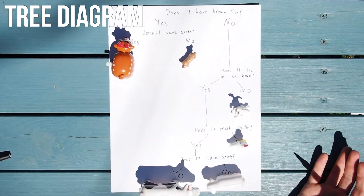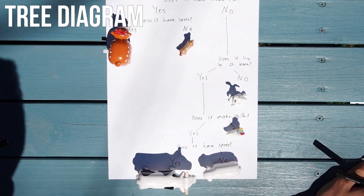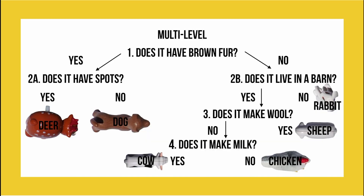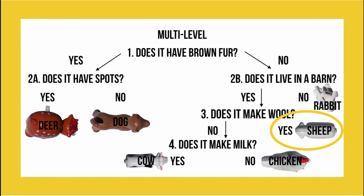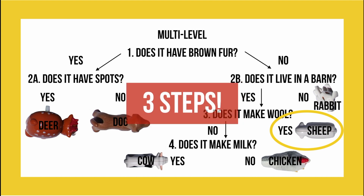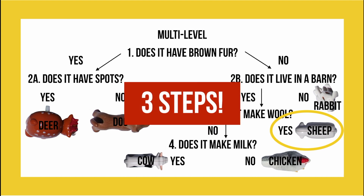So how does this tree diagram compare to our linear approach? Using the tree diagram that we drew earlier, we are again choosing the sheep. The sheep doesn't have brown fur, so the first answer is no. It lives in a barn, so the next answer is yes. And finally it makes wool. This time it only took us three steps to reach our final answer.